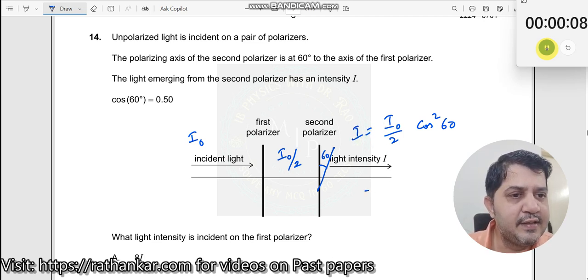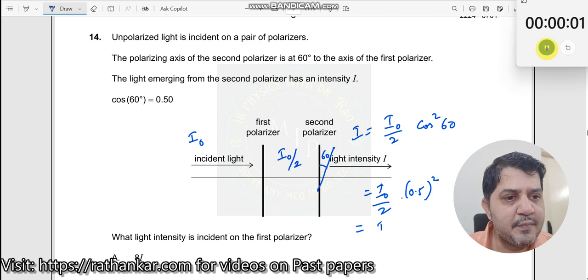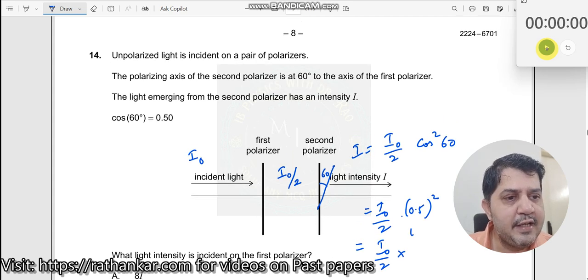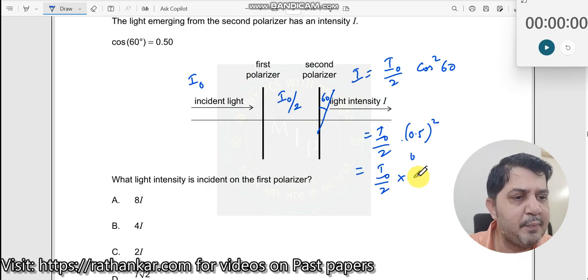Now this is equal to i0 by 2 into what is cos 60, 0.5. So you substitute here, 0.5 whole square, which should be equal to i0 by 2 into 0.25.